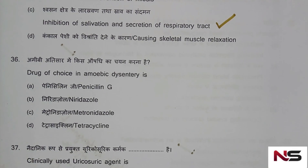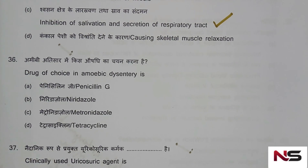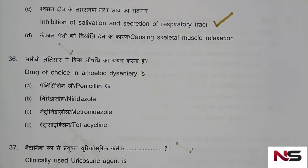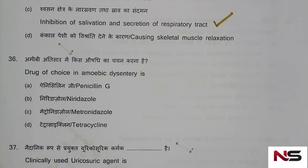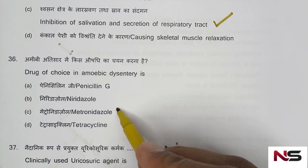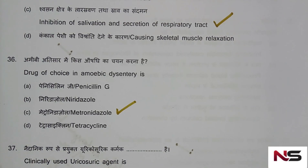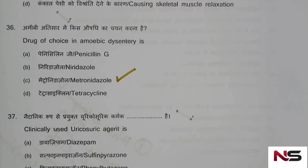Question 36: Drug of choice in amoebic dysentery. Options are: penicillin G, niridazole, metronidazole, tetracycline. The correct answer is option C — metronidazole.